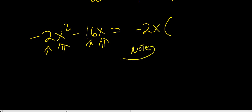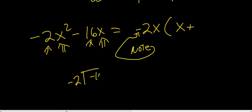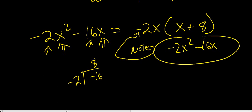Note this negative sign — keep that in mind while figuring out what goes inside the parenthesis. Ask yourself what number times negative 2x gives me negative 2x squared — that's x, because a negative times a positive gives a negative. The last term has to be positive because a negative times a positive gives a negative. You can take negative 2 divided by negative 16 to get 8, so 8 goes there. Check: negative 2x times x is negative 2x squared, and negative 2x times 8 is negative 16x — that's what we started with.